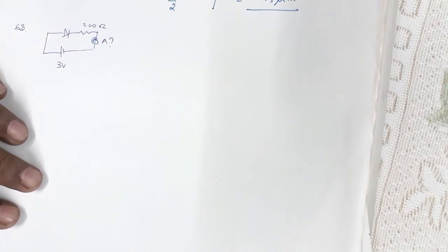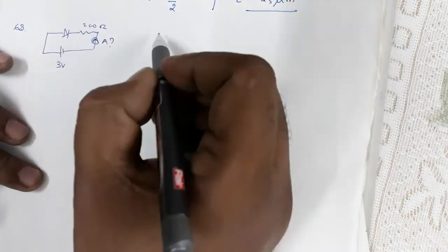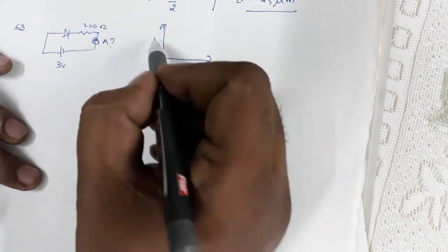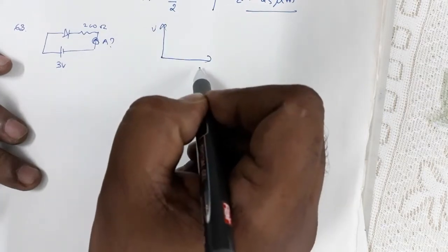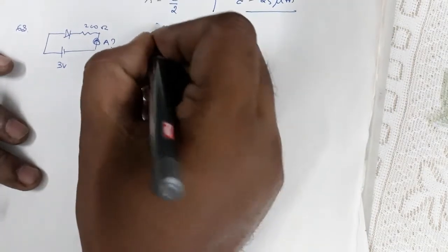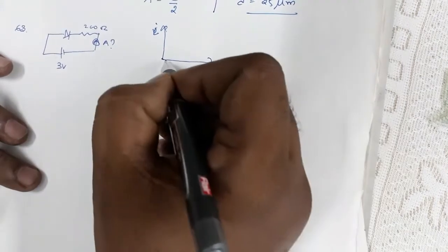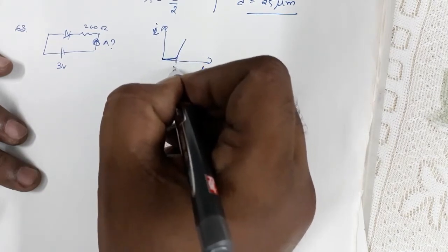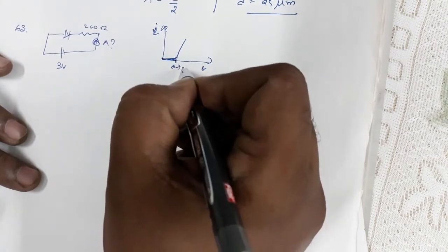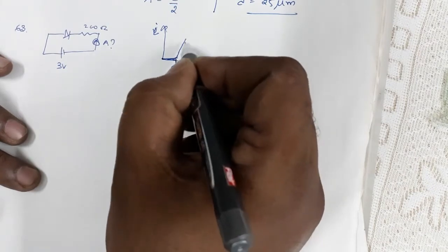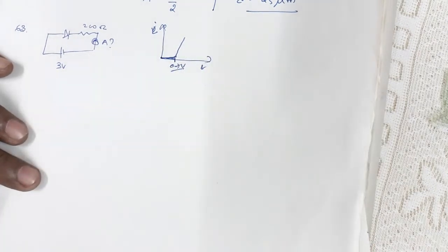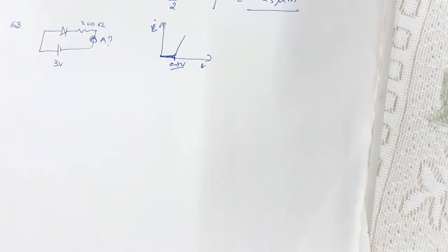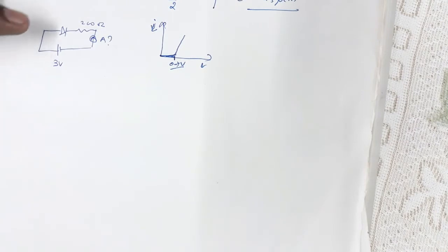This diode is forward biased. In the NCERT textbook, the voltage versus current graph for a forward biased diode shows that until 0.7 volts the current is zero, and beyond 0.7 volts the current increases. So 0.7 volts is the cut-in voltage — the minimum voltage that must be applied for the diode to start conducting.